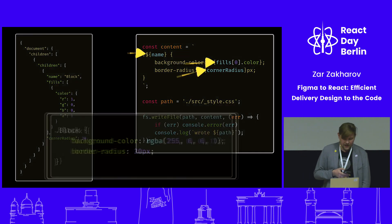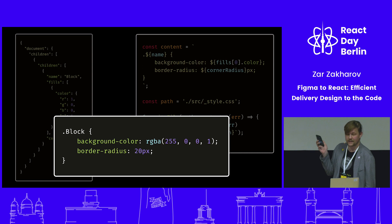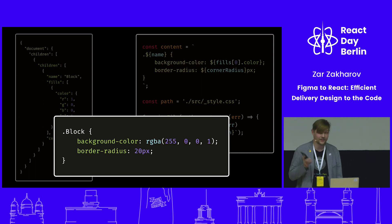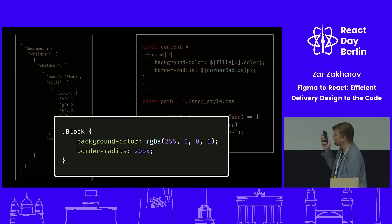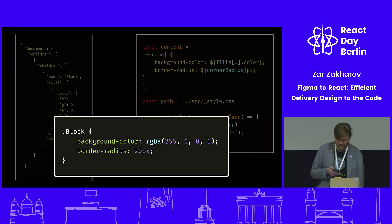Now we can do something with this. We take these variables and write them out as CSS styles and save the file. In this case we use the file stream in Node.js. And we get this CSS file — I hope it's clearer for us as developers, because we see this kind of code every day when fixing bugs.